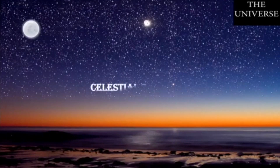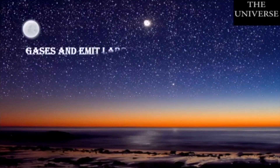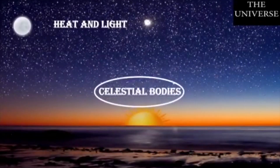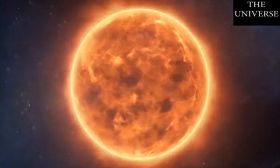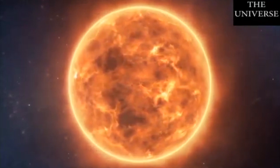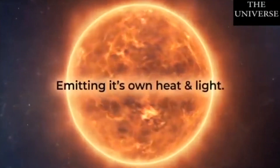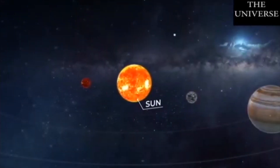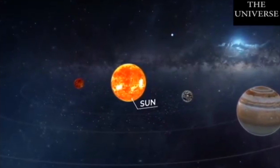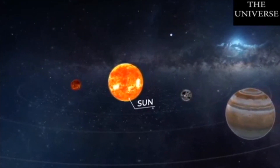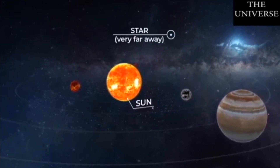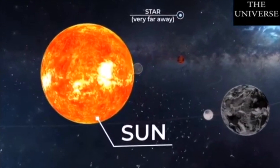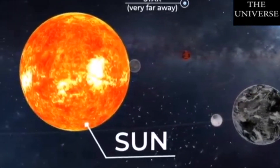Some of the celestial bodies are very big and hot. They are composed of gases and have their own heat and light — these are called stars. Each star is a huge, dense mass of hot and burning gases that emit heat and light in large amounts. Therefore they are called self-luminous objects, as they emit light on their own. The Sun is also a star. The other stars look so small compared to the Sun because they are very far away from us, whereas the Sun looks bigger and brighter because it is nearer to the Earth than the other stars.